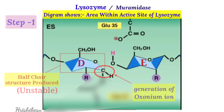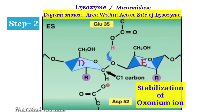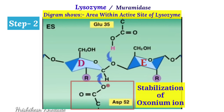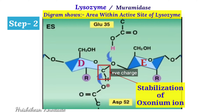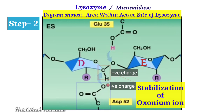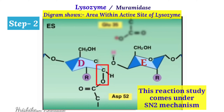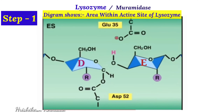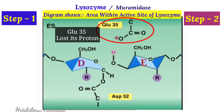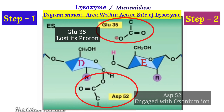In chemistry, sugar molecules exhibit two conformations: chair and boat. Chair conformation is more stable, but due to formation of the oxonium ion, a half-chair conformation is produced, which is an unstable structure. In step two, stabilization of the oxonium ion takes place with the help of aspartic acid 52. The oxonium ion at C1 of the NAM sugar carries a positive charge, while aspartic acid 52 is in a negative state, so they undergo charge-charge interaction. No covalent bond formation takes place here — this falls under the SN2 mechanism.